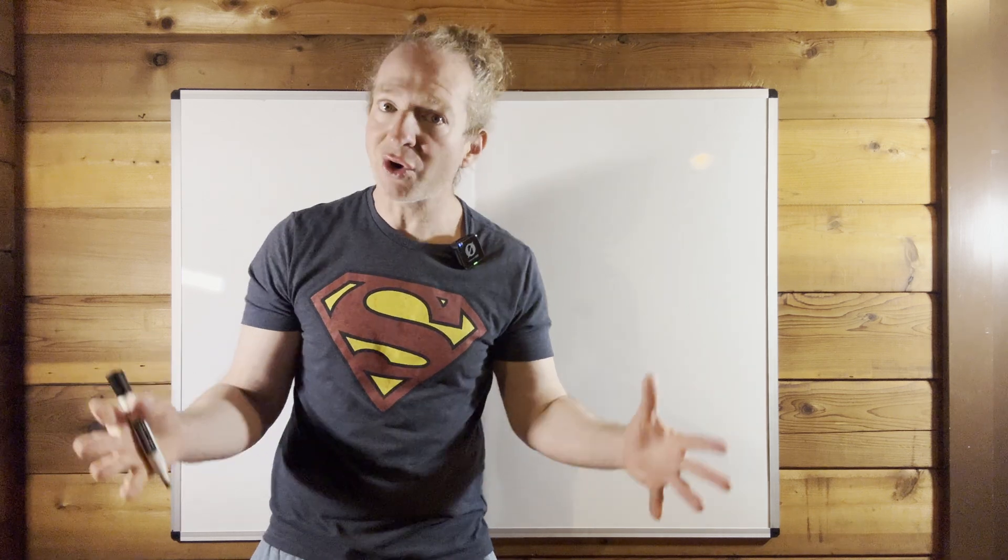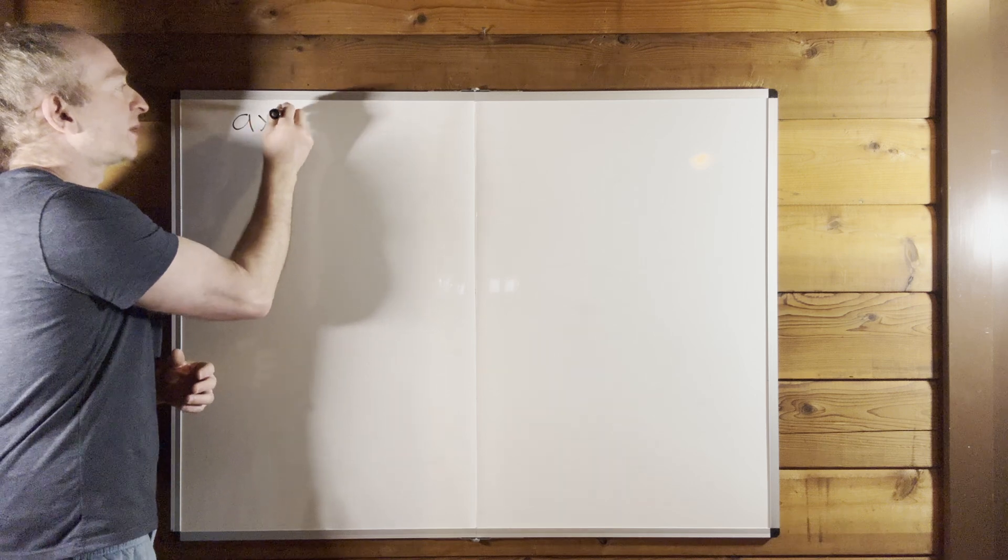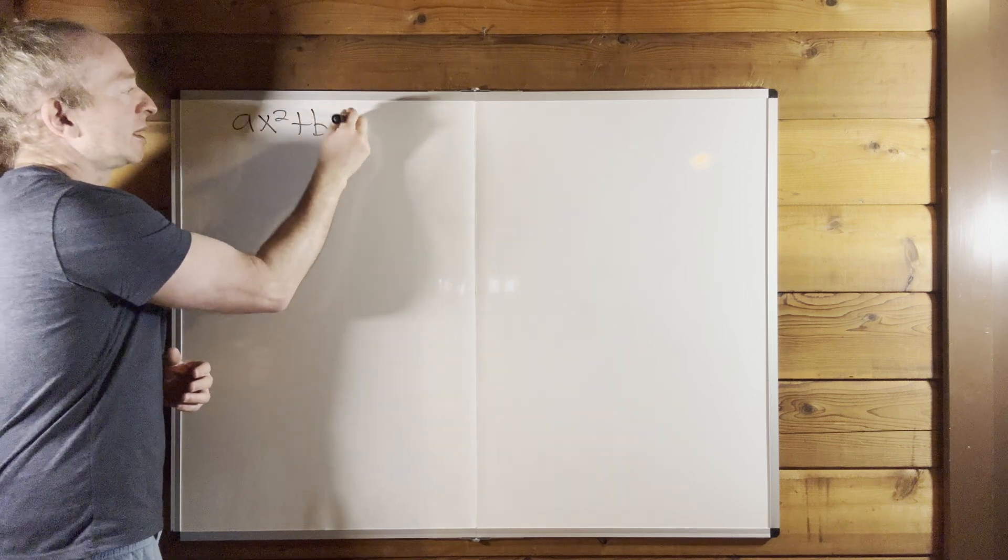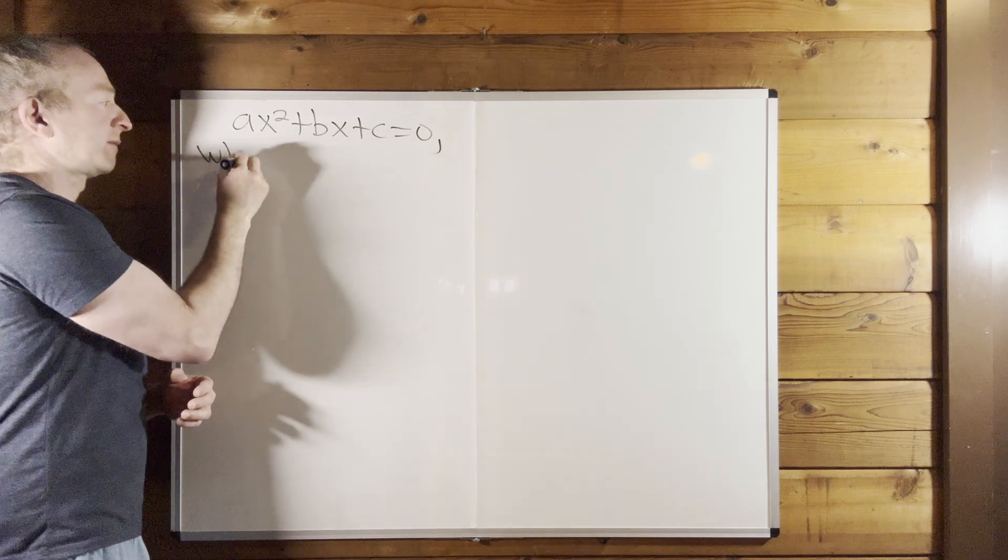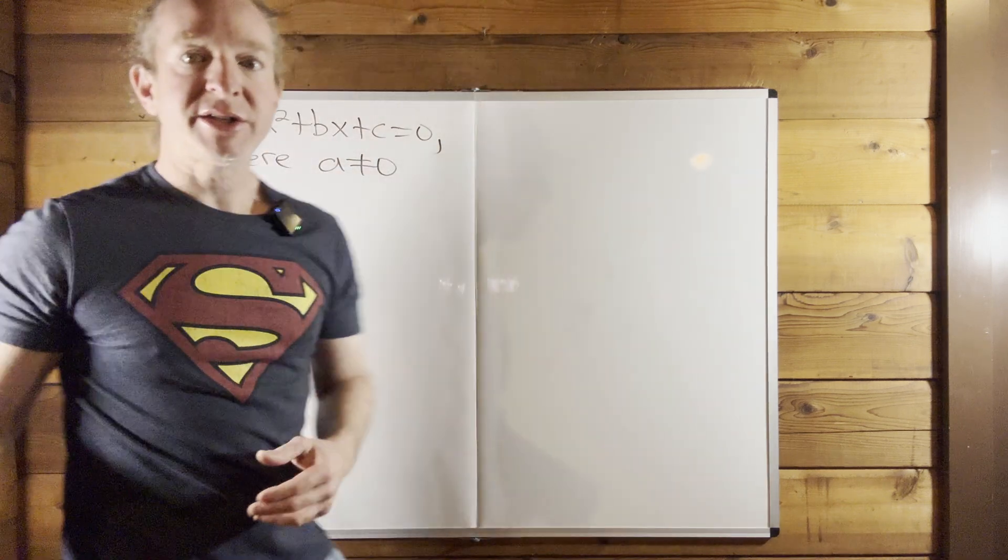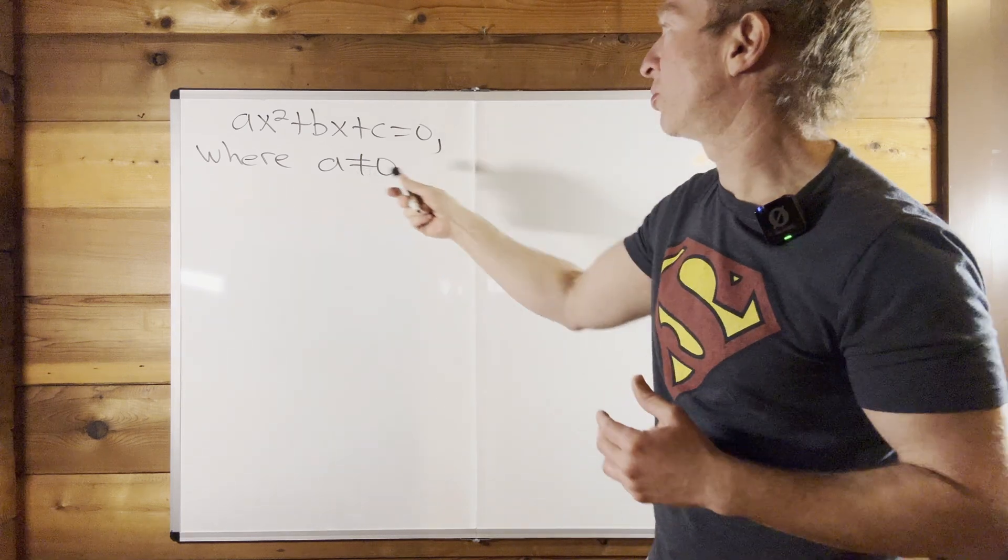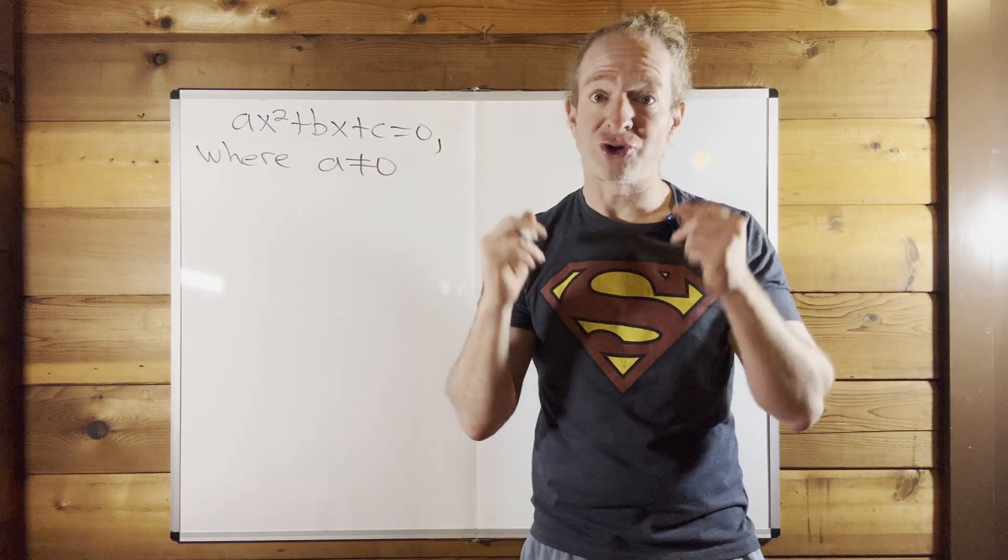So let's start. What is the quadratic equation? So if we have an equation of the form ax squared plus bx plus c equals zero, where a is not equal to zero, this is called a quadratic equation. So whenever you have an equation that has this form, it's called a quadratic equation.